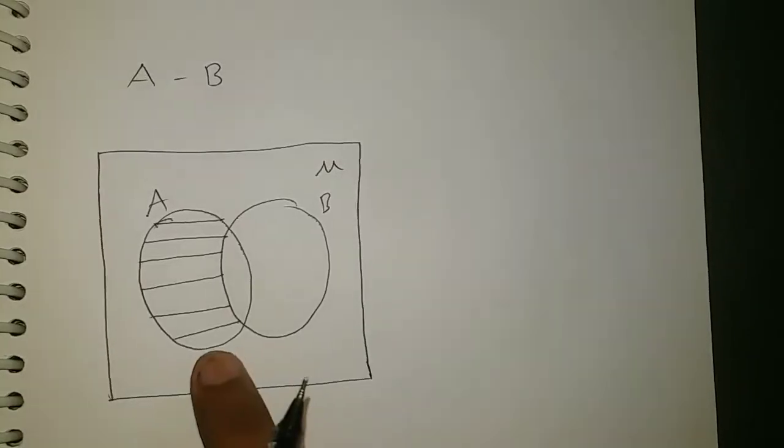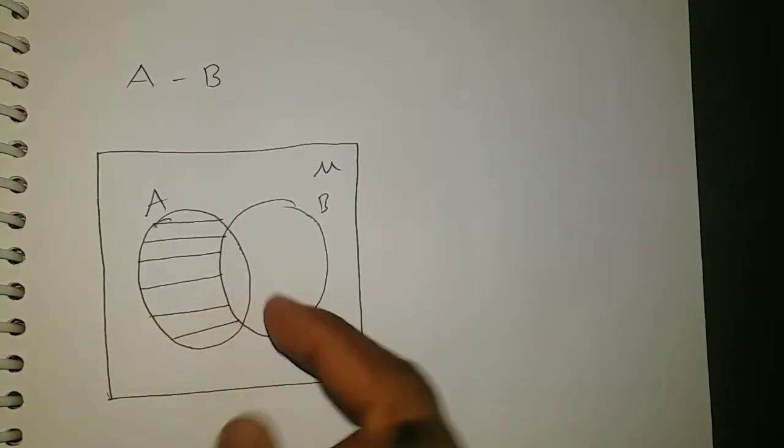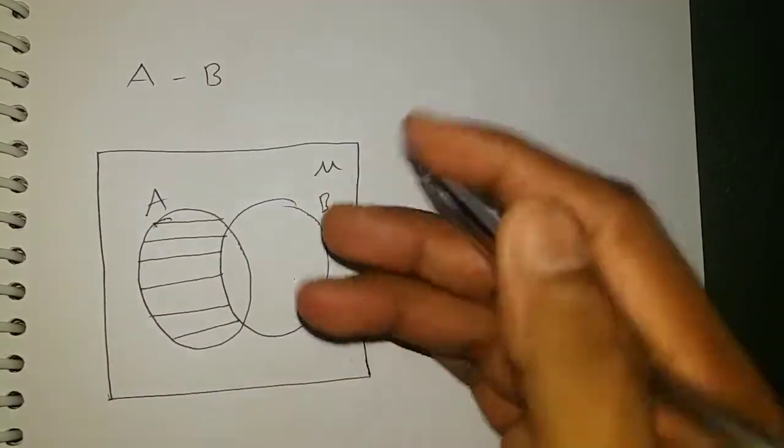What does A minus B mean exactly? We need to remove all the elements from A which are in B. So the elements which are there in B, we are removing that completely. Then what about B minus A?